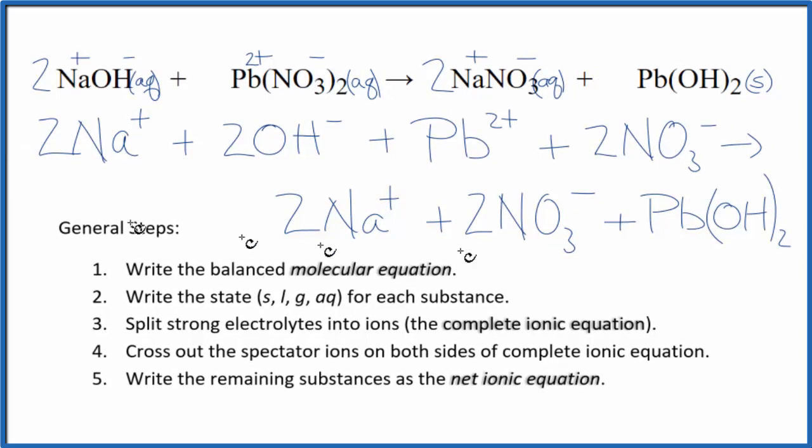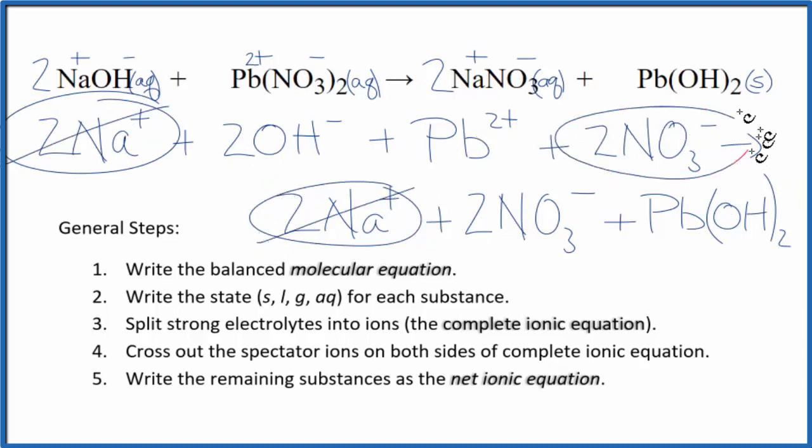So this is our complete ionic equation. Now in cross-out spectator ions. They're on both sides of the complete ionic equation. They haven't changed, so we're not really interested in them. In my reactants here, I see I have two sodium ions. In the products, two sodium ions. So those, we don't need. Reactants, two nitrate. Product, two nitrates. Cross those out.